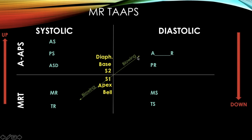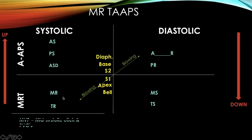Blowing murmurs are associated with regurgitant murmurs — that's why the arrow points only to the regurgitant murmurs. Draw a separation line for mitral valve prolapse; it is a systolic murmur but not a blowing sound — it's associated with the mid-systolic click. The most associated EKG finding for mitral valve prolapse is premature ventricular contractions.